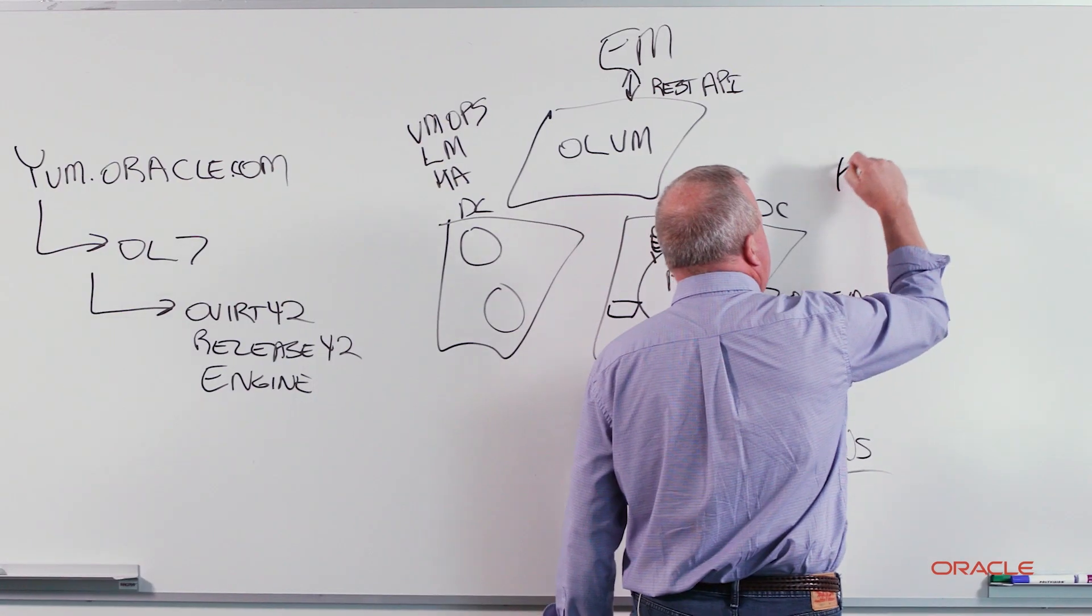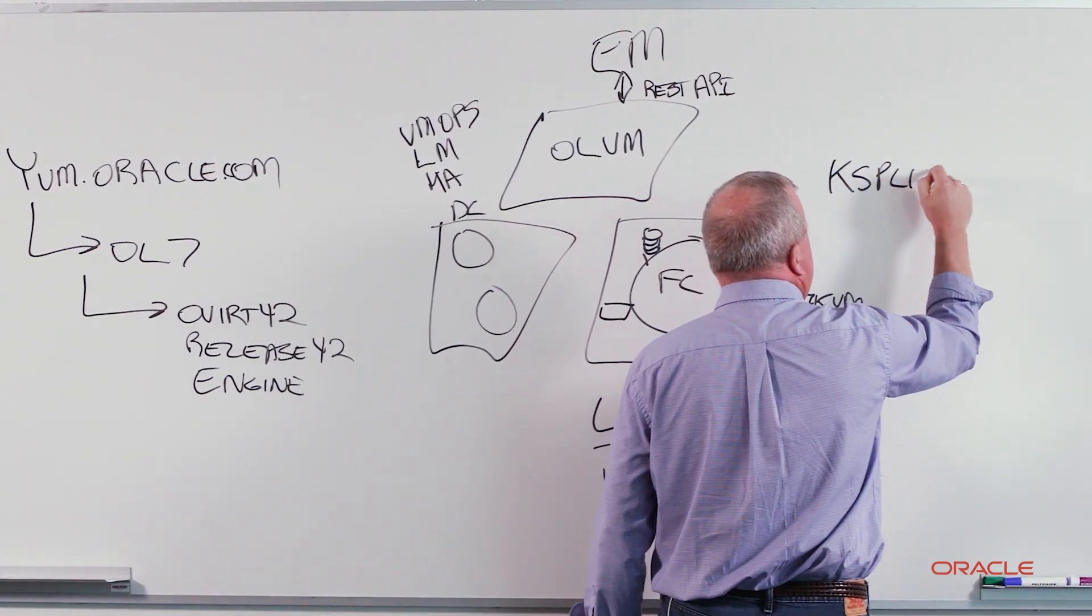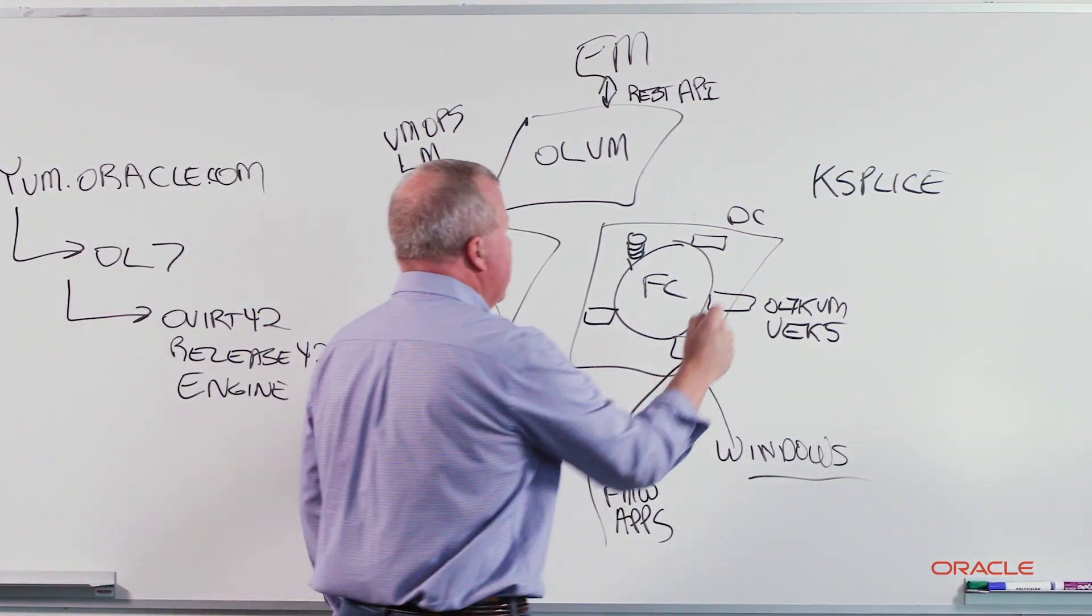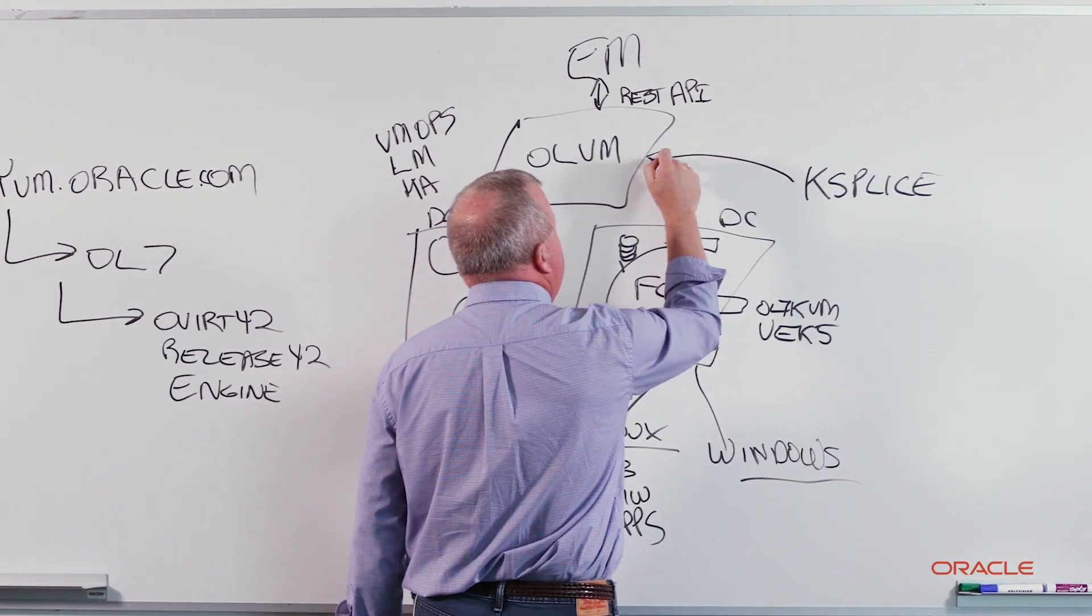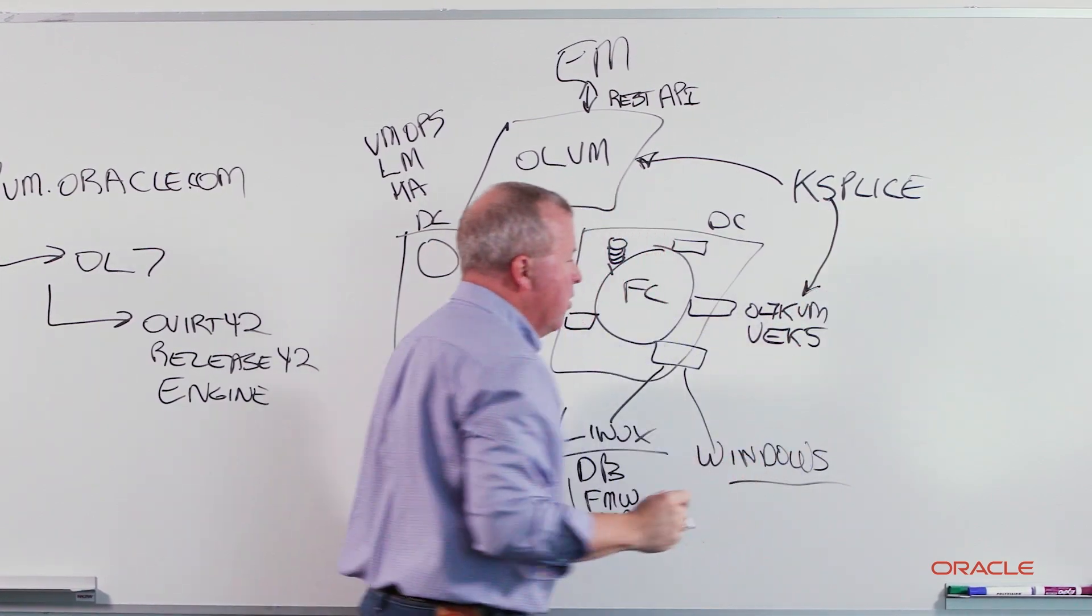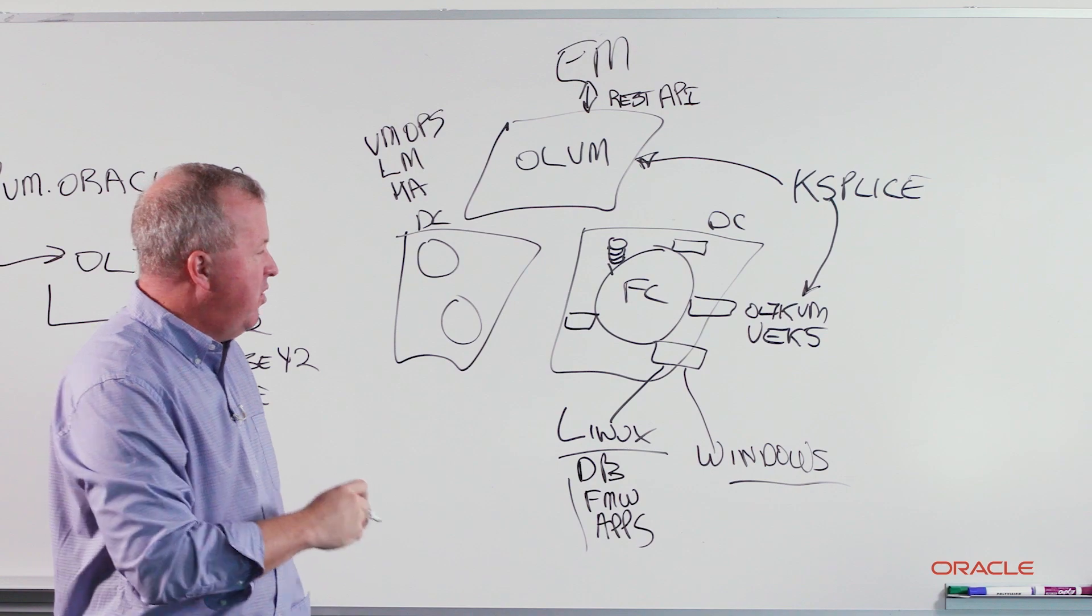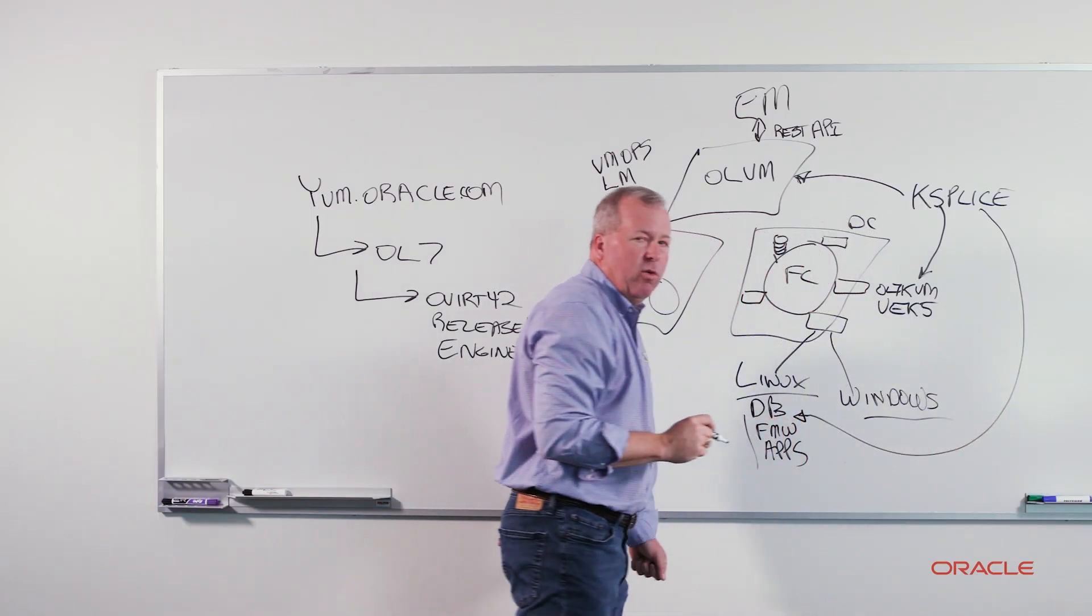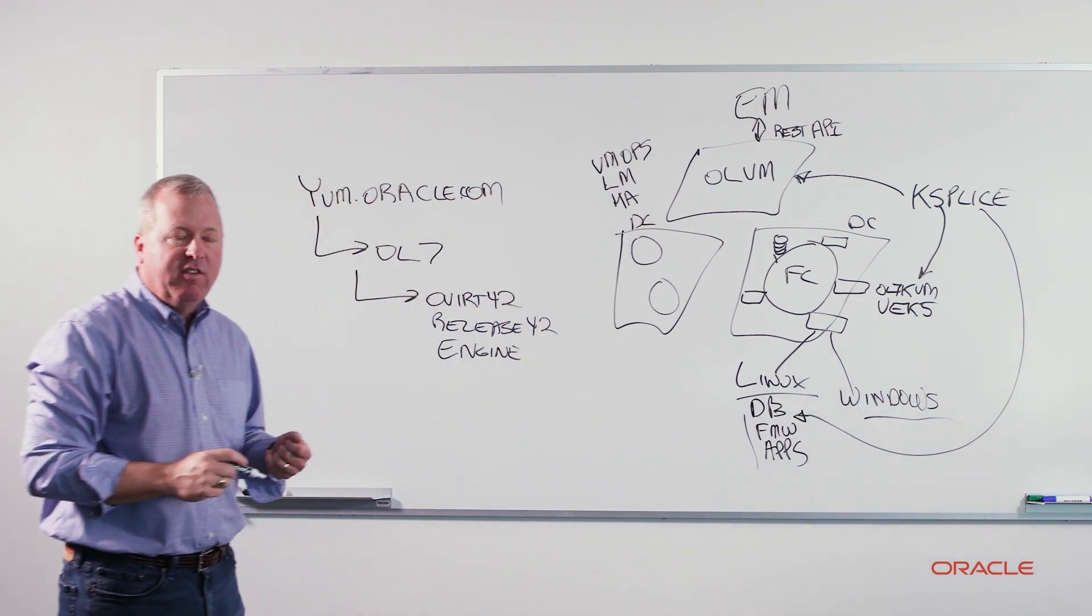The other piece that we add on top of this virtualization environment is KSplice technology. You can use KSplice to patch your manager host. You can use it to patch your Oracle Linux 7 KVM host. Or you can use it to patch your virtual machines running Oracle Linux. All three levels of patching.